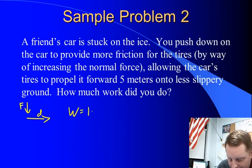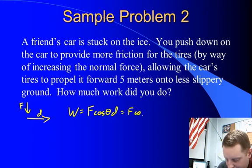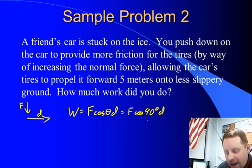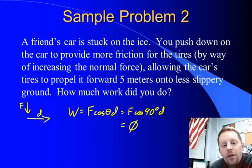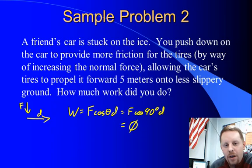So the work done is F cos theta times the displacement or F cos 90 degrees times the displacement. Cos 90 degrees is zero, therefore the work done will be zero. You did no work because the force that you applied did not cause the displacement. The car caused the displacement. Only the force in the direction of the displacement counts for work. So in this case, you didn't do any work. You expended a lot of energy and were perhaps very helpful for your friend, but no work was done in the physics sense.